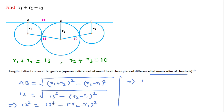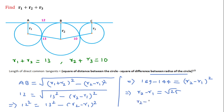So directly writing: 169 minus 144 equals r2 minus r1 whole squared. This means r2 minus r1 equals the square root of 25, so r2 minus r1 equals 5. Considering the given equation as first and this result as second, we proceed to solve them simultaneously.